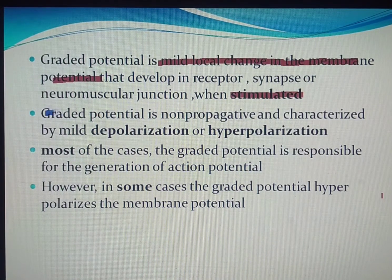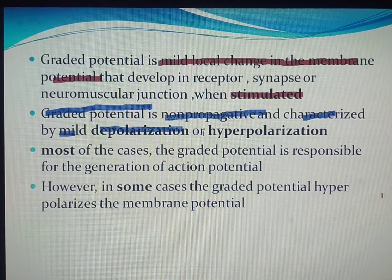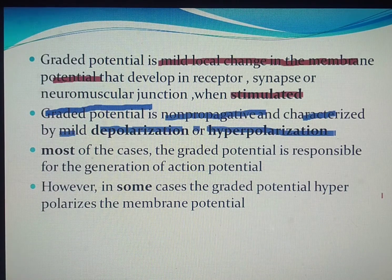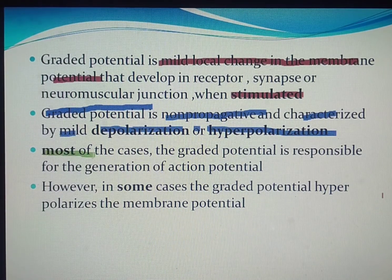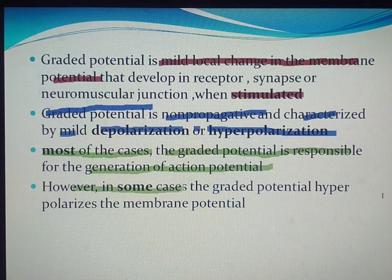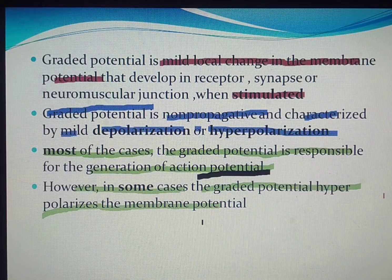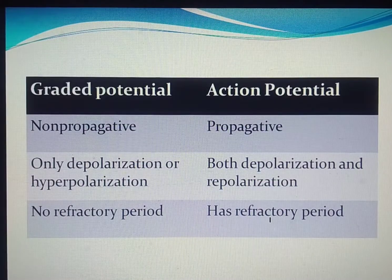Graded potential is non-propagative. It is characterized by mild depolarization — meaning positivity inside and negativity outside the cell — or hyperpolarization, which means negativity beyond the resting membrane potential. In most cases like neuromuscular junction, the graded potential is responsible for the generation of action potential. However, in some cases like synapse, the graded potential hyperpolarizes the membrane potential.